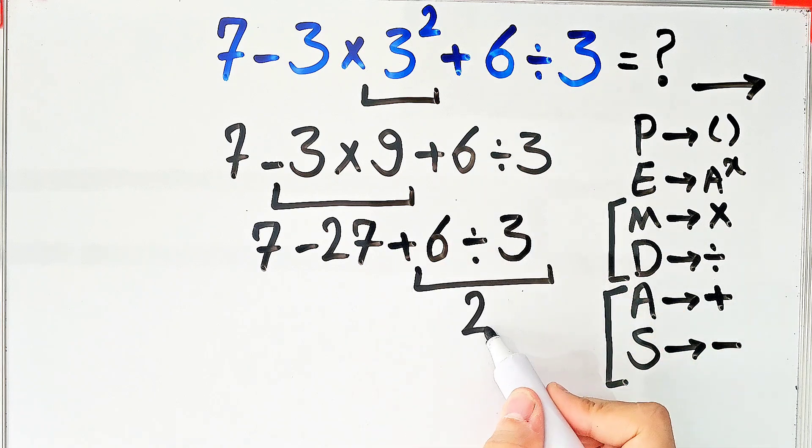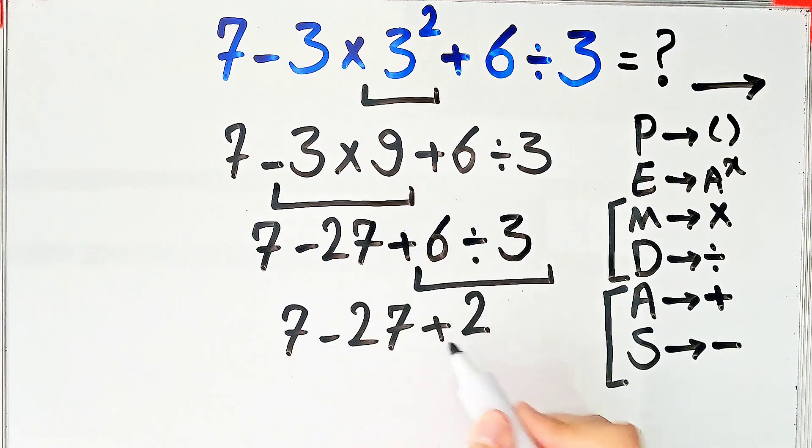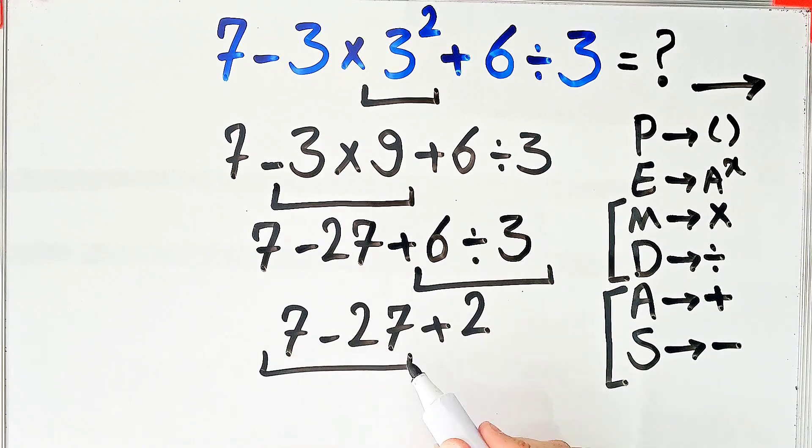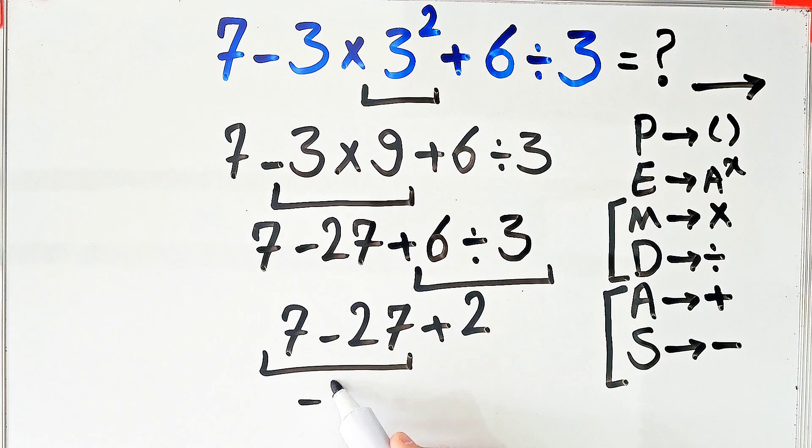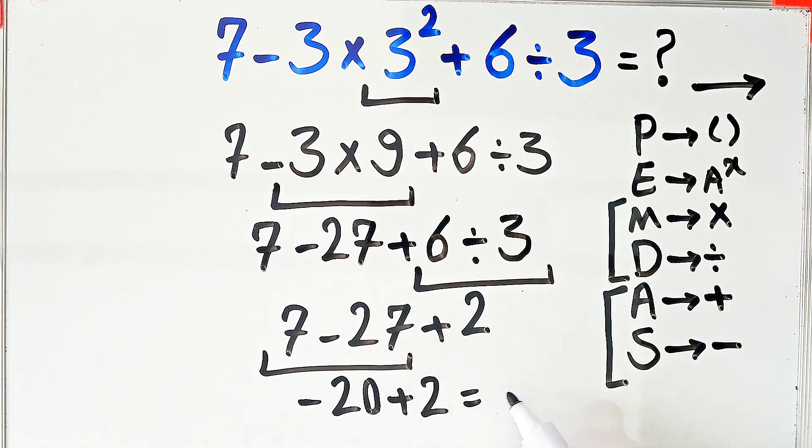Seven minus twenty-seven equals negative twenty. And negative twenty plus two equals negative eighteen.